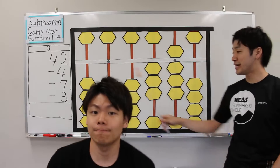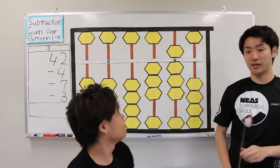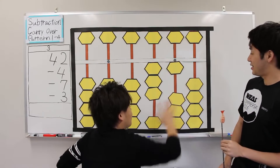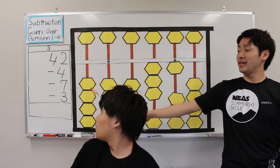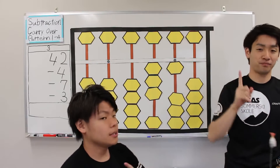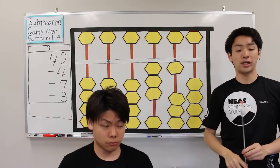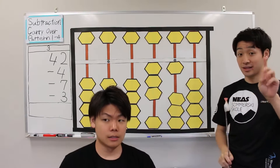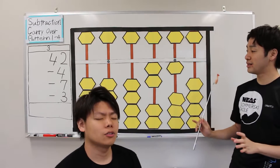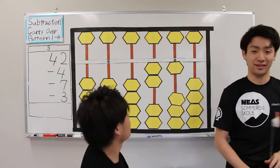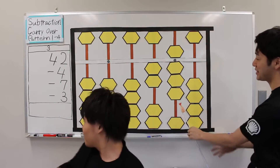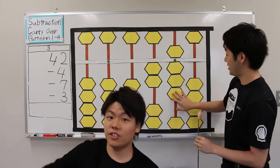Okay, next: minus 7. Good, you have it. Finally: minus 3. Only one piece. So, 2 subtract 3, subtract 10, and add 7. So the answer is 28.